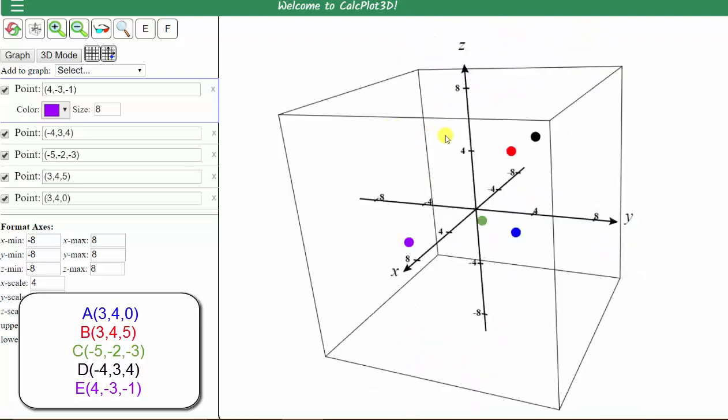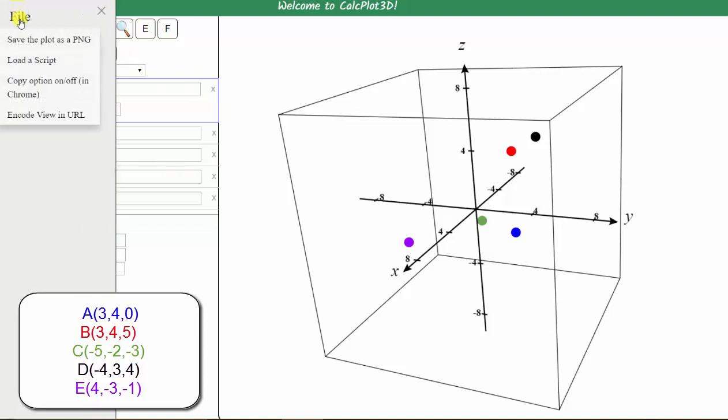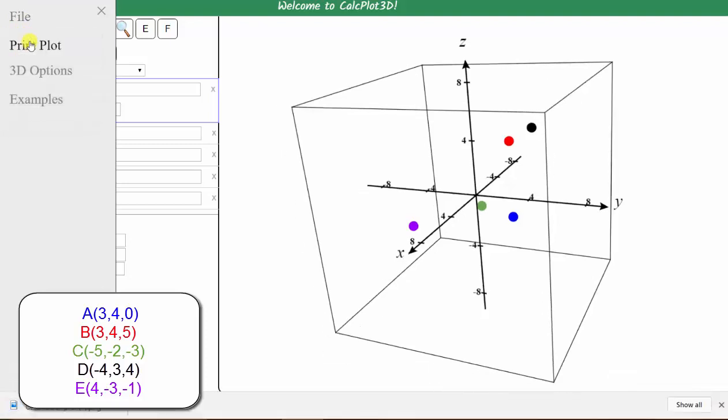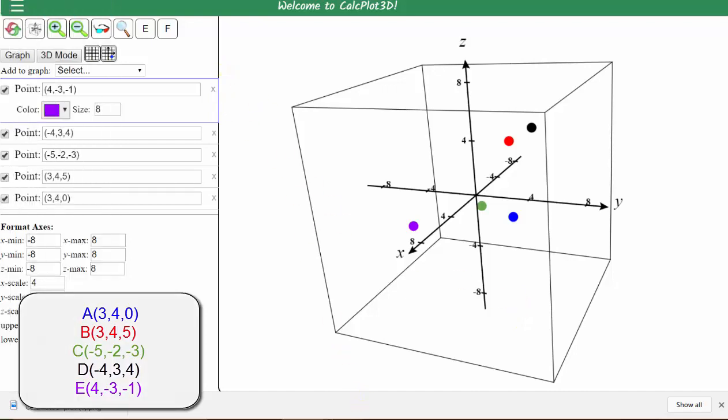We can also download this graph as an image by clicking the three triple bars in the upper left hand corner, select file, and then select save the plot as a PNG. This allows you to save the graph as an image. I hope you found this helpful.